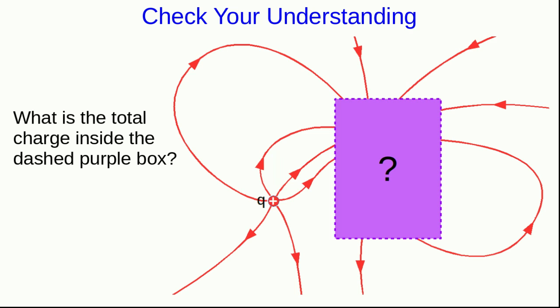The first thing to notice is that this positive charge with charge q on it has six lines coming out. And so that's the convention for the diagram, that a charge of plus six corresponds to six lines.